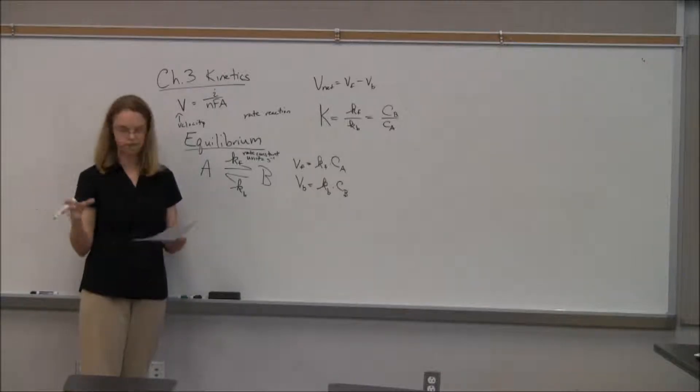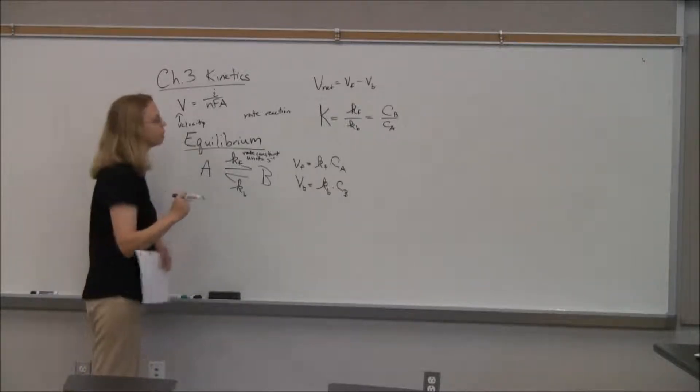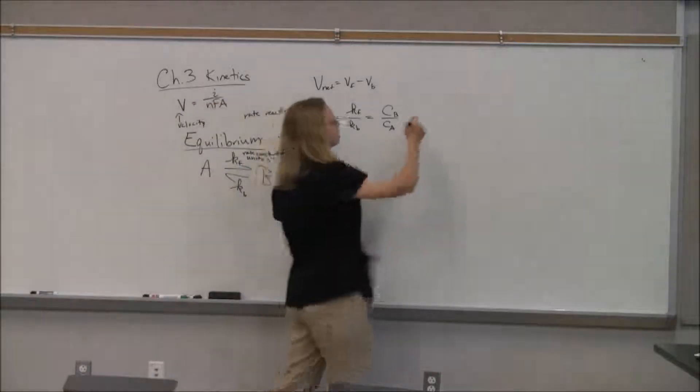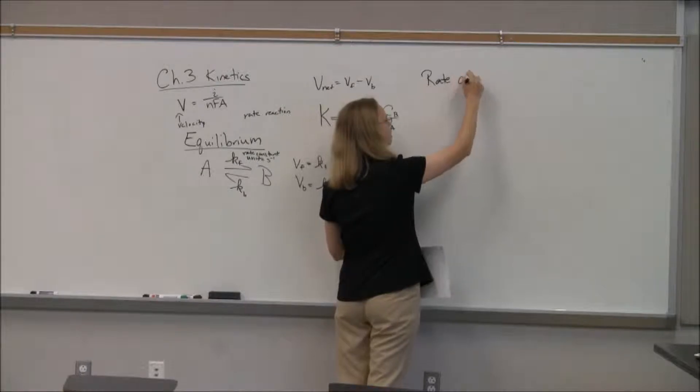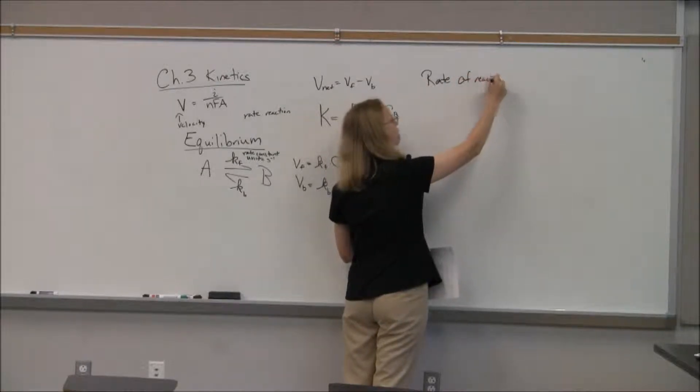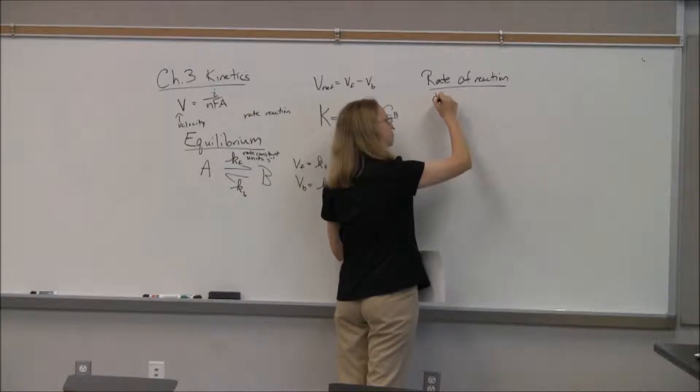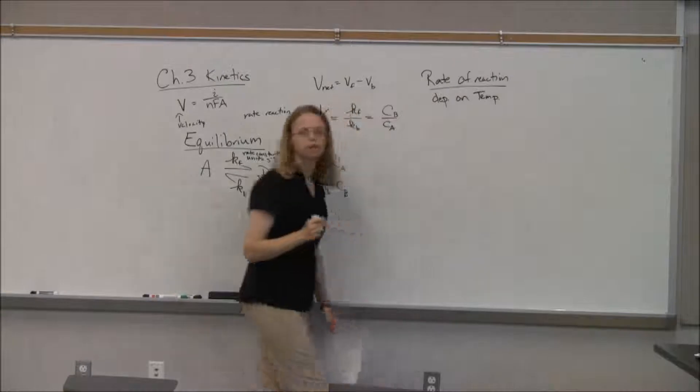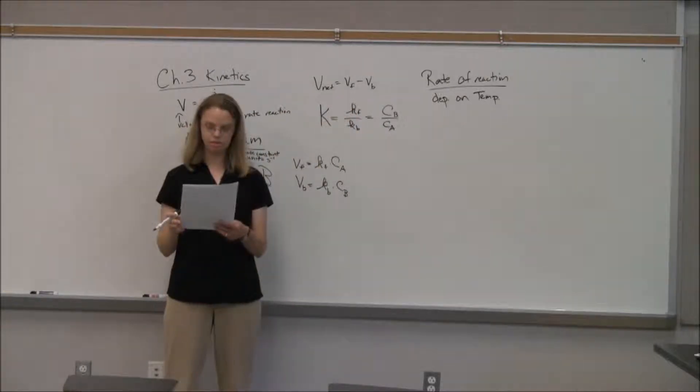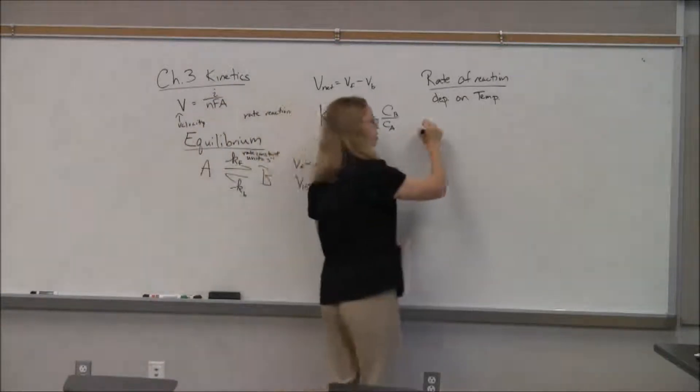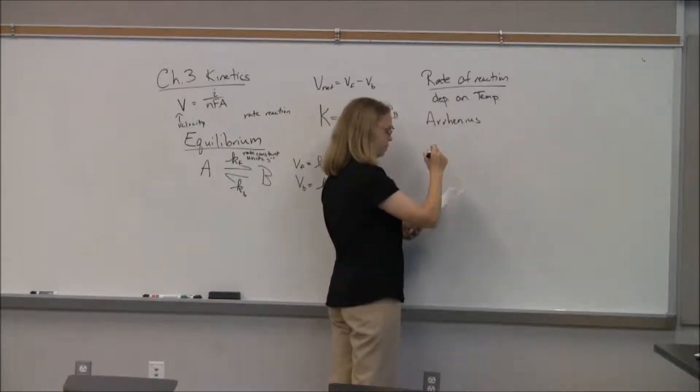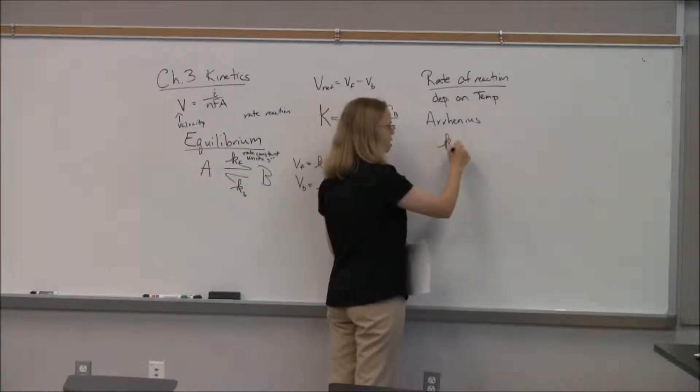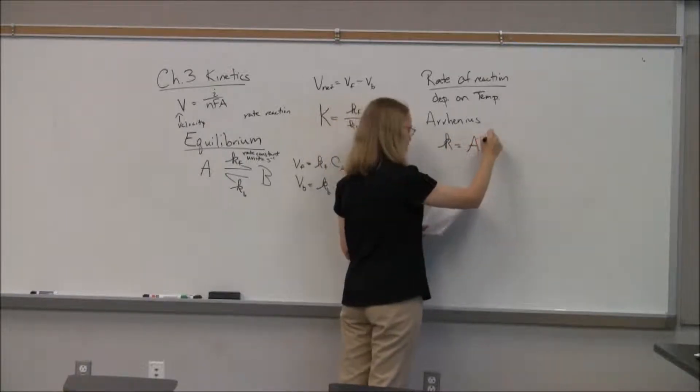The equilibrium constant would be Kf over Kb, so the forward rate over the backwards rate. And then if we look at that, we actually end up getting it proportional to the concentrations. So we can look at these and get rates of how we're going with our equilibrium. So that's equilibrium, nothing's really changed from when you've learned equilibrium before.